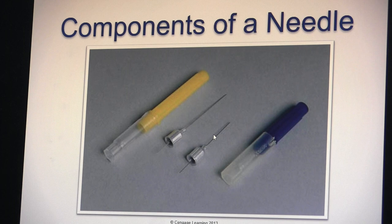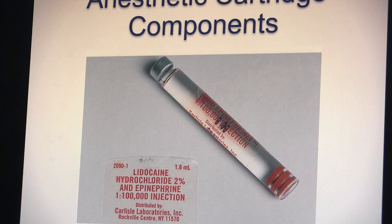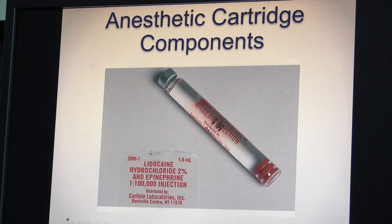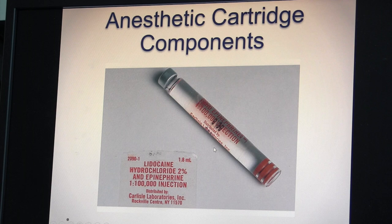The anesthetic cartridge — also called a carpule — consists of a glass cartridge, a rubber stopper or plunger at one end, an aluminum cap, and a diaphragm at the other end where the short end of the needle goes. The harpoon attaches to the rubber stopper end, and the needle goes at the diaphragm end.